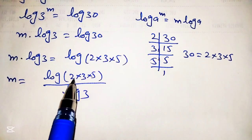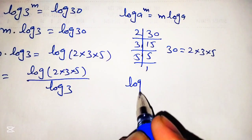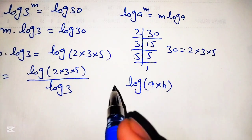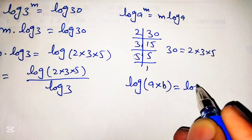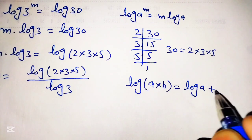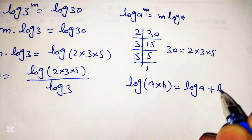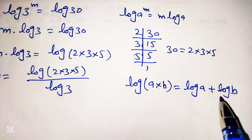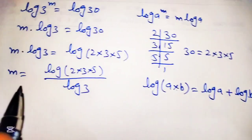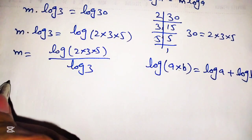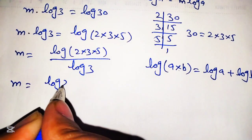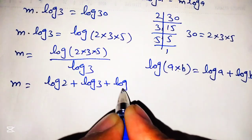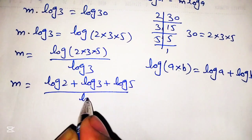Now to solve this term we will use the logarithmic product formula: log of a multiplied by b, where two factors are multiplying inside the log, can be written as separate logarithms with a plus sign between them. So log of a into b is equal to log of a plus log of b. According to this formula we rewrite m as m is equal to log of 2 plus log of 3 plus log of 5, all over log of 3.